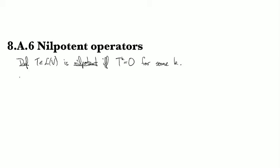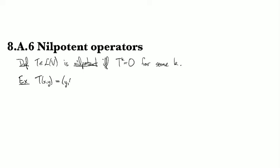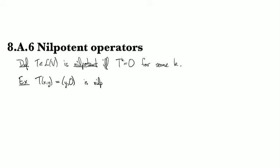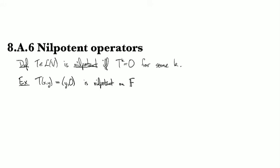And so examples of this, the classic example that was introduced a while back and it's kind of been dogging your heels all the way along is this one that moves y to the first component and replaces it by zero. So this is a nilpotent operator on F^2.